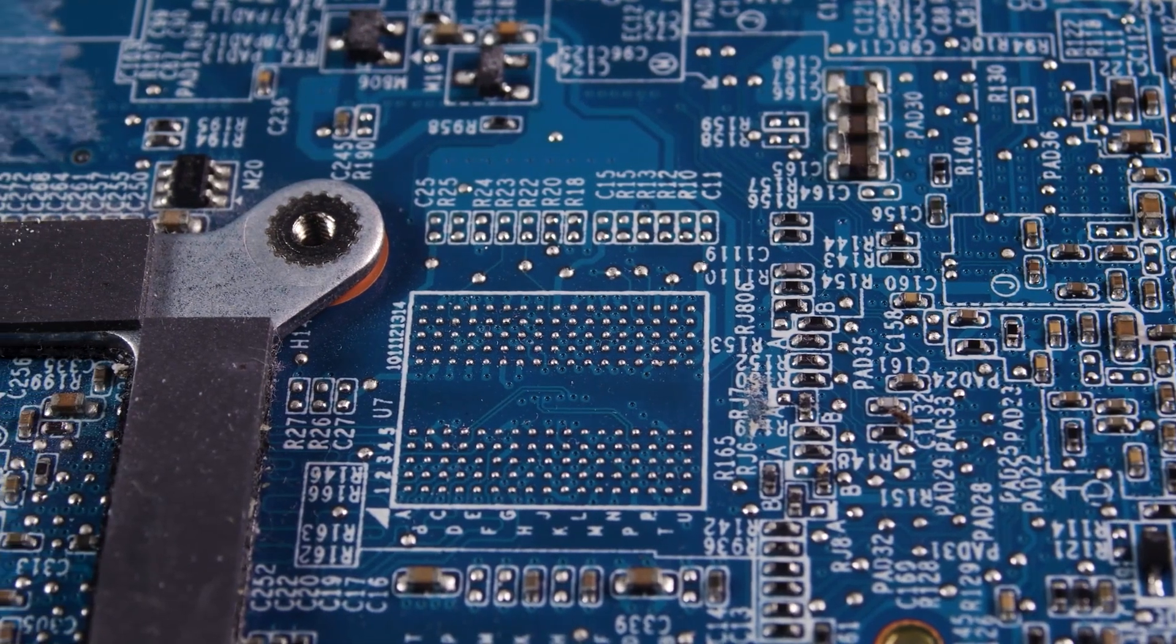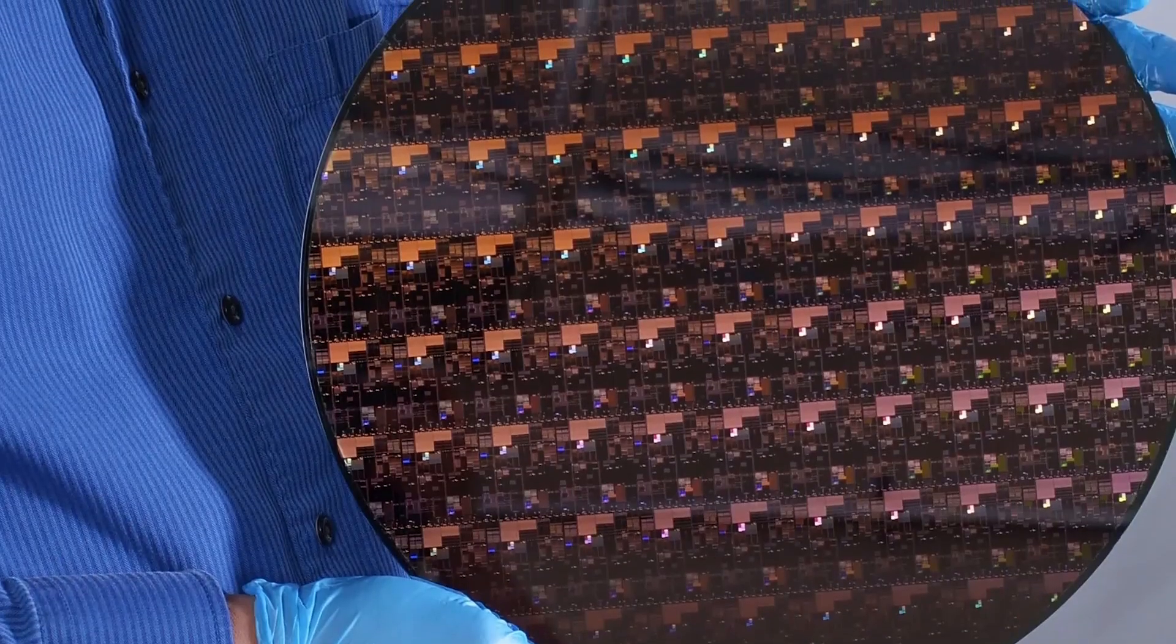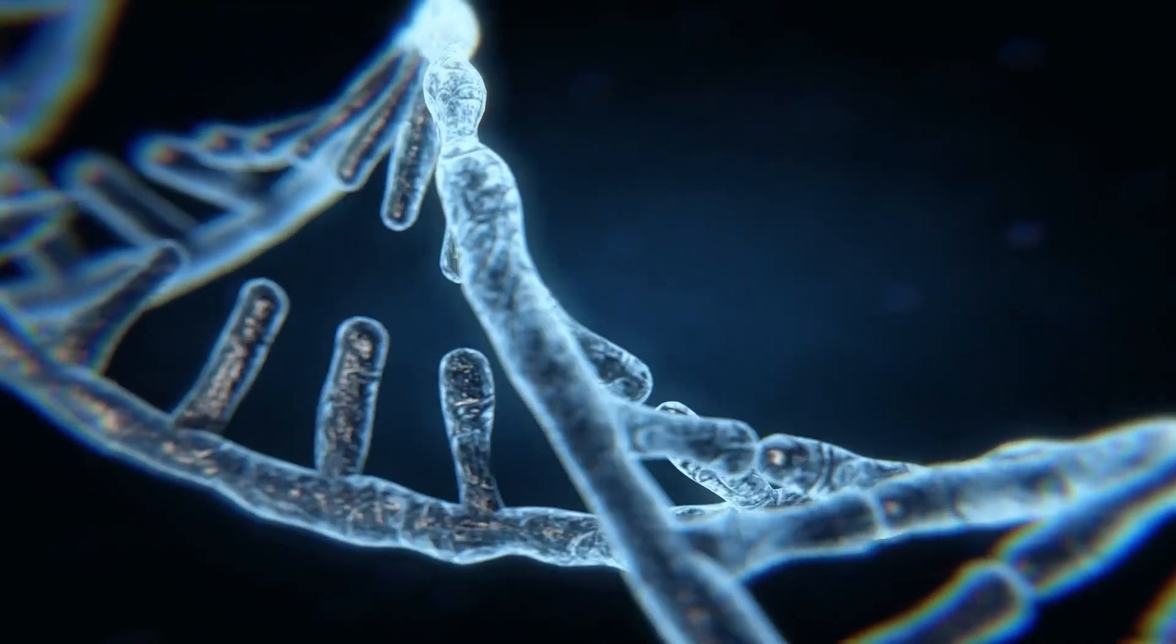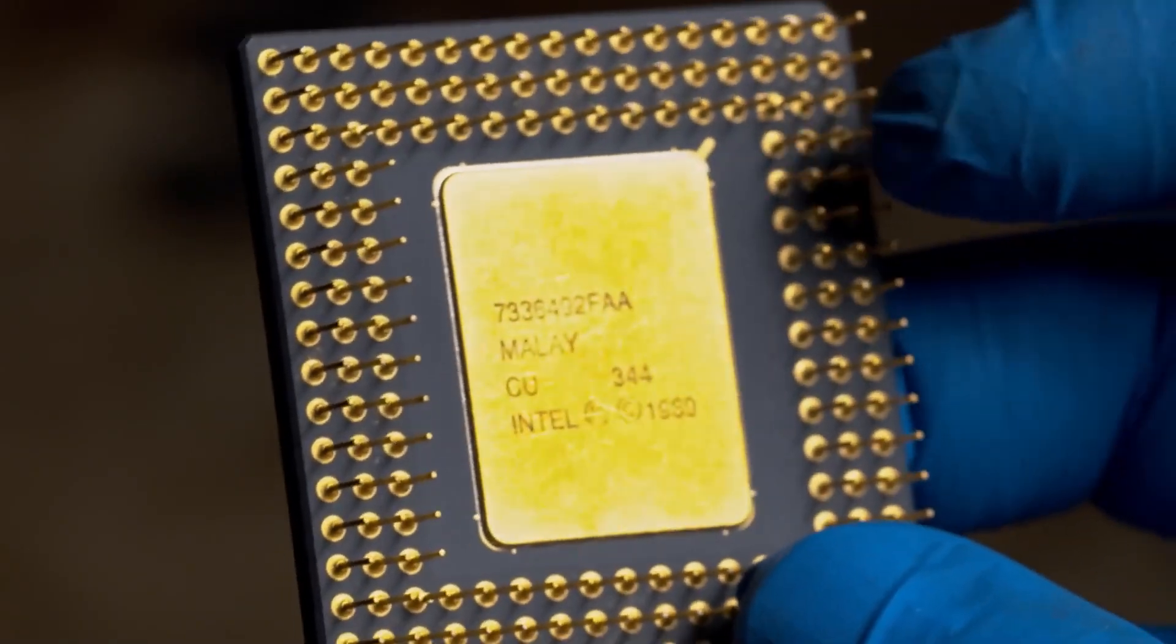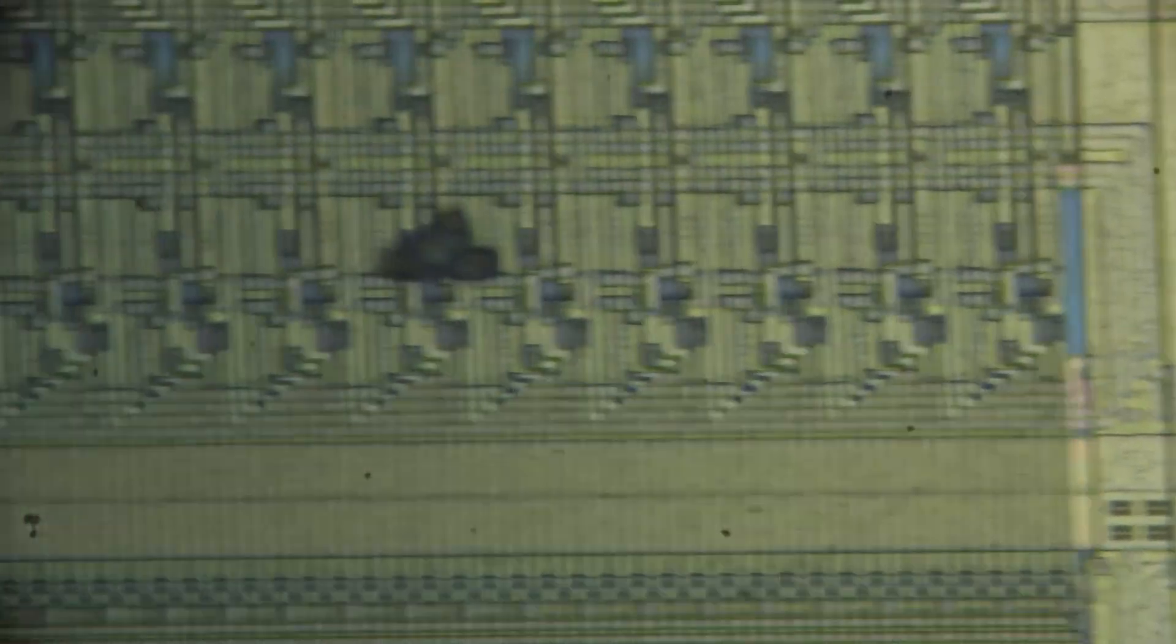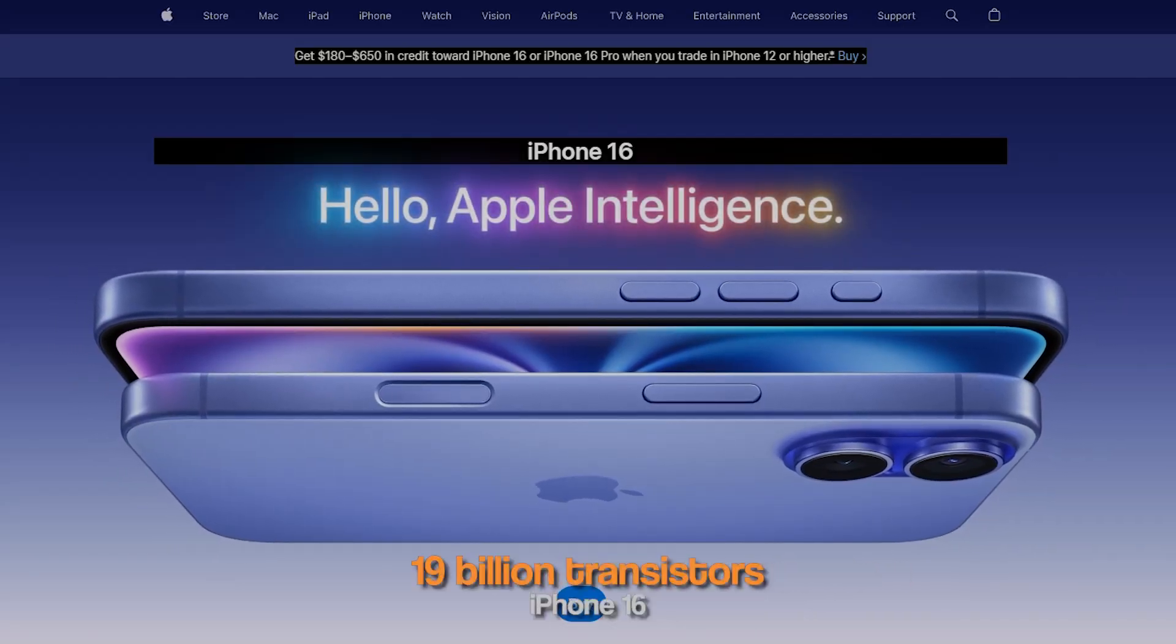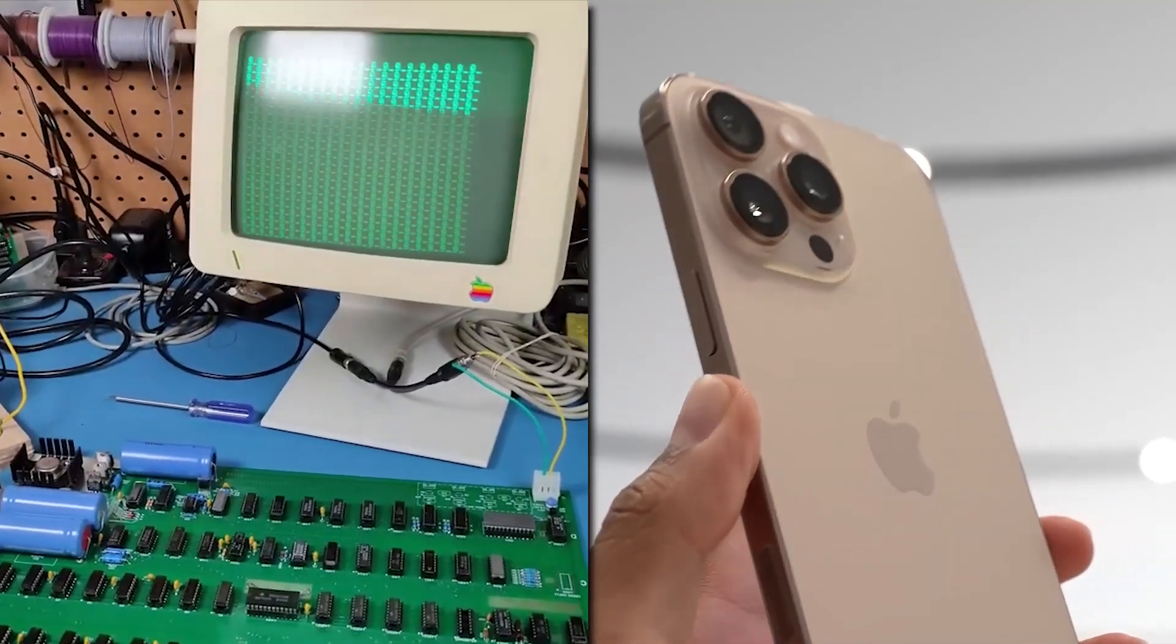Over the years, transistors have been decreasing in size. Now the smallest one is roughly three nanometers, which is slightly wider than a strand of DNA. It's expected that in a short time, transistors will be only one nanometer wide. To give you perspective, the Apple One had 200 transistors. The latest iPhone has 19 billion transistors and it's only a fraction of the size of the Apple One.